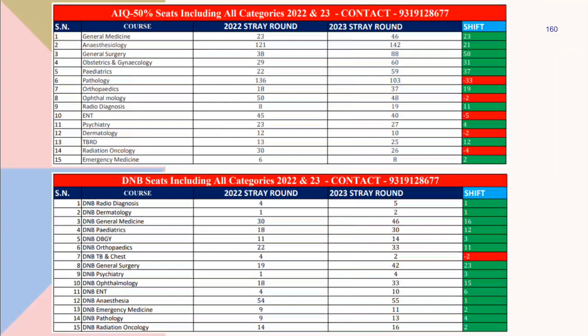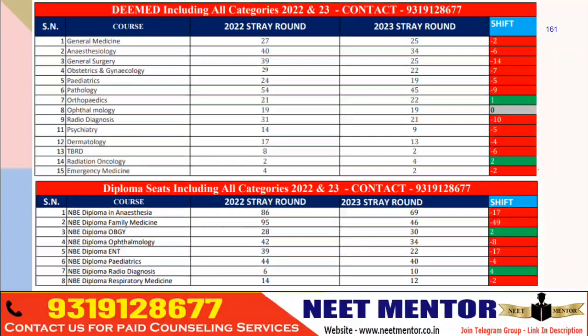You can take screenshots of all the seat matrix details to know how many seats are available in each branch and compare with last year. In diploma, we have fewer seats compared to last year, and in DNB also fewer seats compared to last year, because many NRI seats with high tuition fees were taken in the third round by candidates with lower scores.